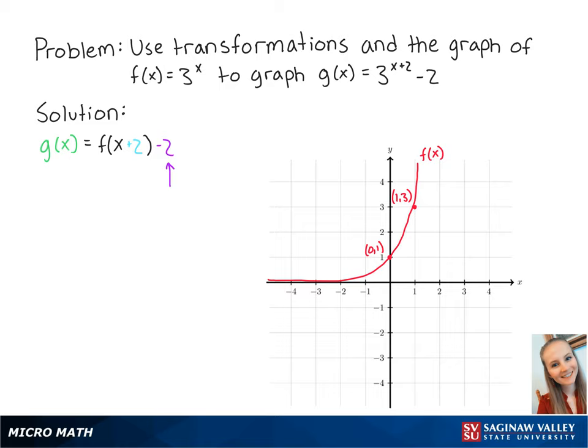Subtracting 2 from the function means that we will shift the graph 2 units down. So our new points are at 0, negative 1 and 1, 1.